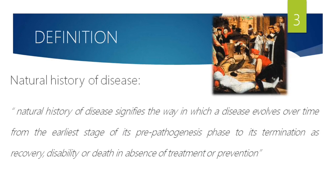Natural history of disease describes what happens when a pathogen enters our body — from the pre-pathogenesis stage, when we're exposed to a place where pathogen entry is possible, to the pathogenesis stage where the pathogen causes its full effect. By definition, a disease evolves over time from the earliest pre-pathogenesis phase to its termination, resulting in recovery, disability, or death — in the absence of treatment or prevention.